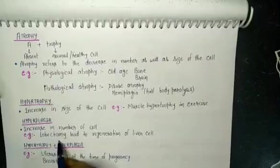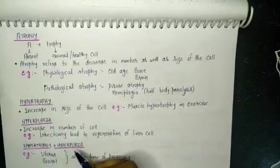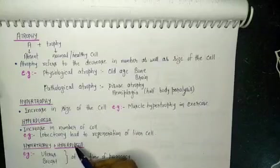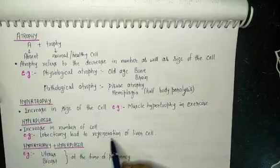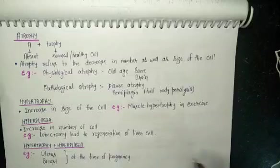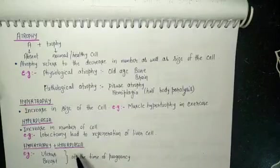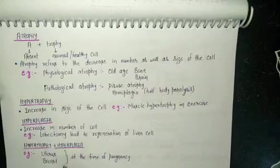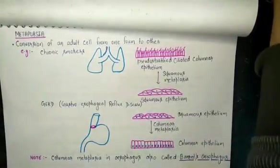An example of hyperplasia is lobectomy — removal of any part of the liver. In case of liver disease, that part is removed, but liver cells have the capacity of regeneration, so the liver will regenerate to a whole liver again. Hypertrophy and hyperplasia can also occur together — for example, during pregnancy there is hypertrophy and hyperplasia of both the uterus and breast tissue in the mother.